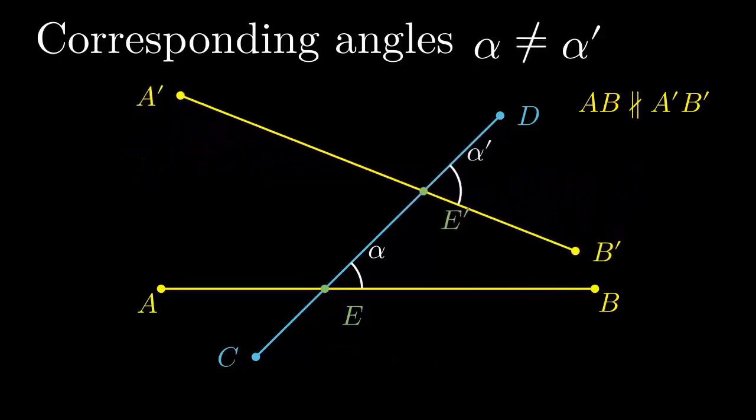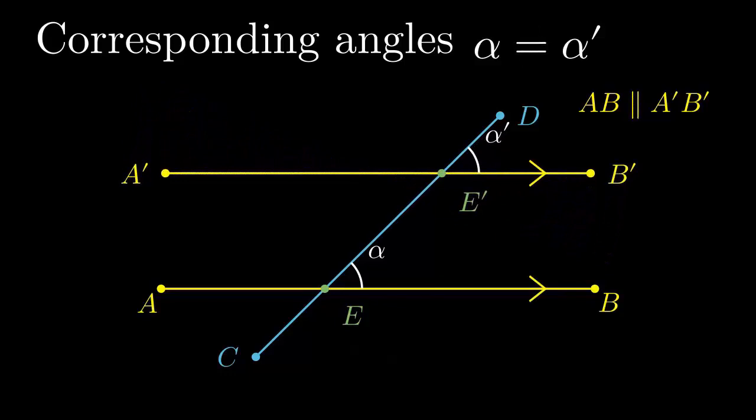If the lines are not parallel, corresponding angles have different measures. We have also seen vertical angles. We can of course use both. Let's combine them.